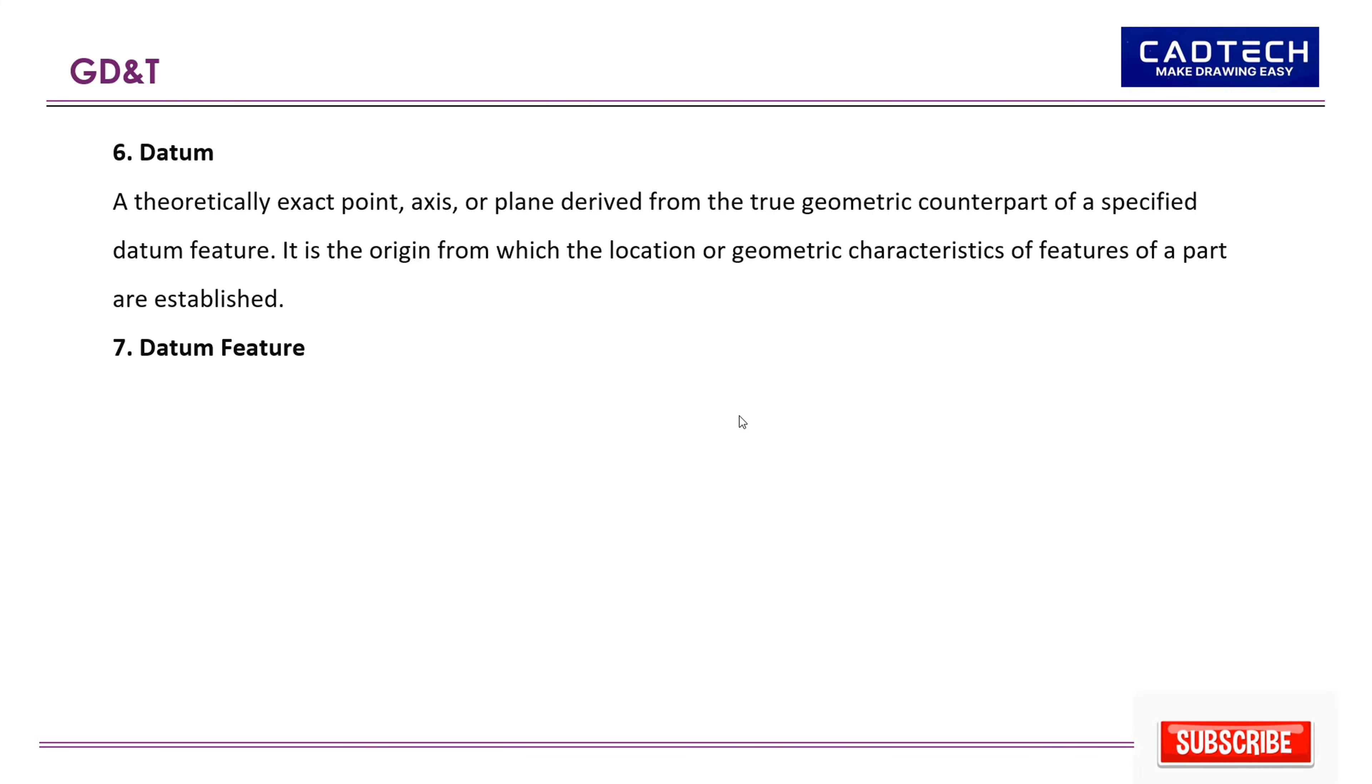7. Datum feature: A physical feature of a part used to establish a datum. 8. Datum target: A specific point, line, or area on a part that is used to establish a datum.